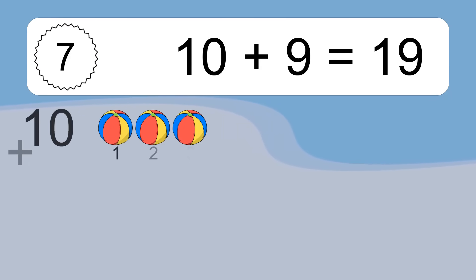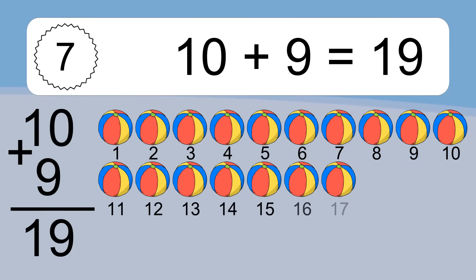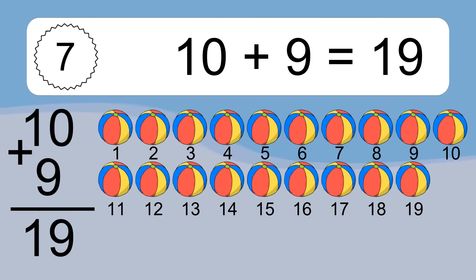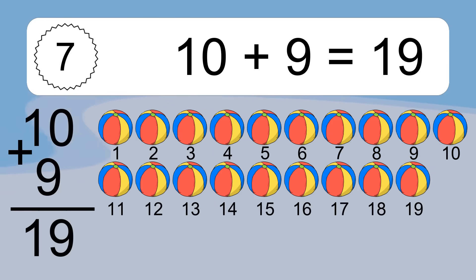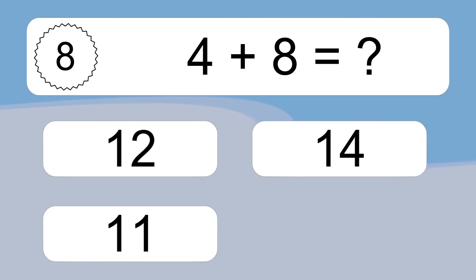10 plus 9 equals what? 10 plus 9 equals 19. Let's count it: 1, 2, 3, 4, 5, 6, 7, 8, 9, 10, 11, 12, 13, 14, 15, 16, 17, 18, 19.